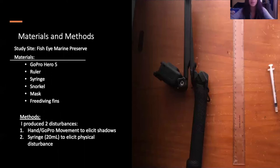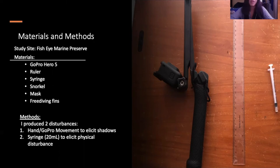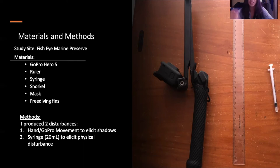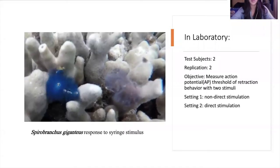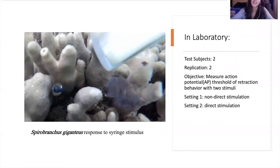I then wanted to do another observational study on the retraction behavior. For materials and methods, I used a GoPro Hero 5 for visuals, a 10-inch ruler, and a syringe. The purpose of the syringe was to squirt the worm, which would initiate a physical disturbance. I used two disturbance methods: the GoPro to elicit shadows or hand movement, and the syringe to elicit physical disturbance. My site was at Fish Eye. This video shows the Christmas tree worm eliciting the retraction behavior in the presence of the syringe.